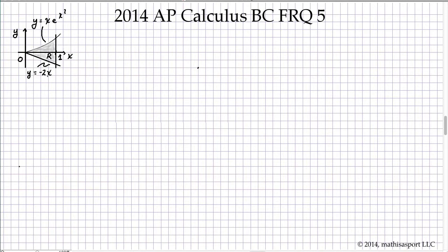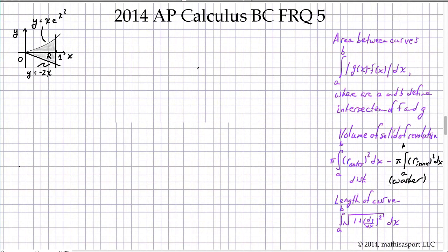We're going to revolve this region around an axis to get a solid of revolution. And then finally, for good measure, we're going to find the perimeter of the region. Get it? For good measure. All right, let's jump into part A, and this is the sort of information that is going to be useful to us.